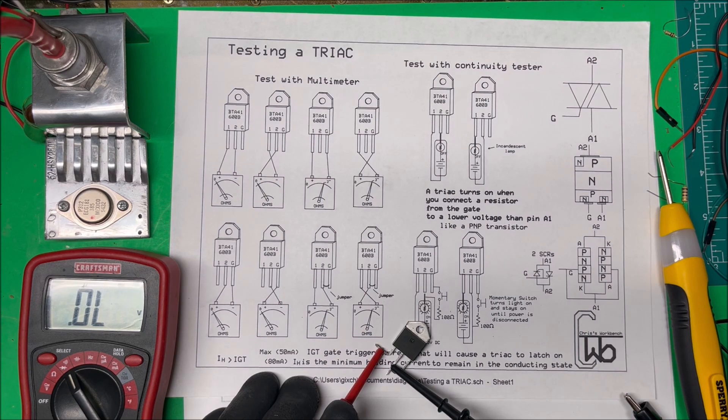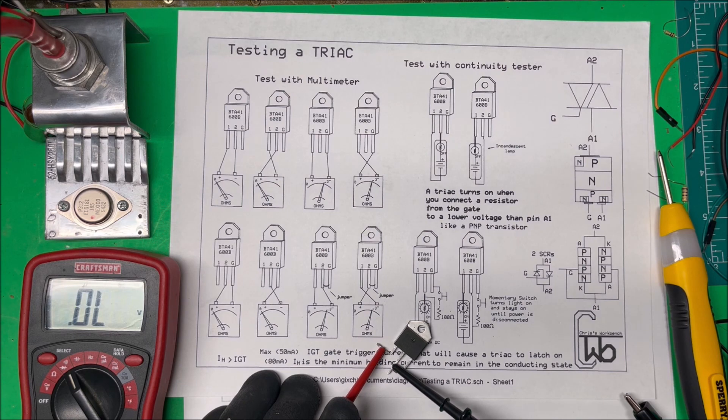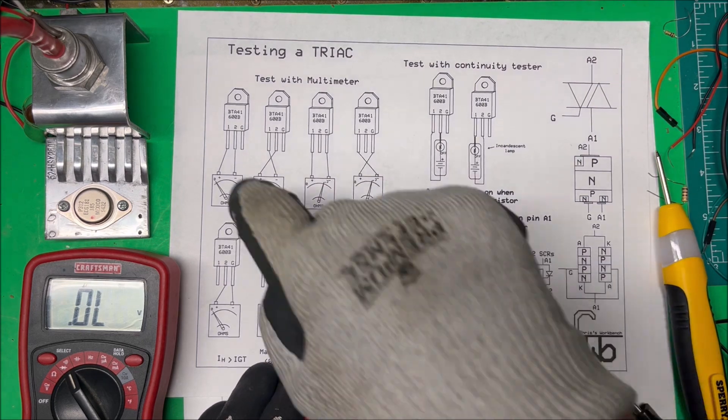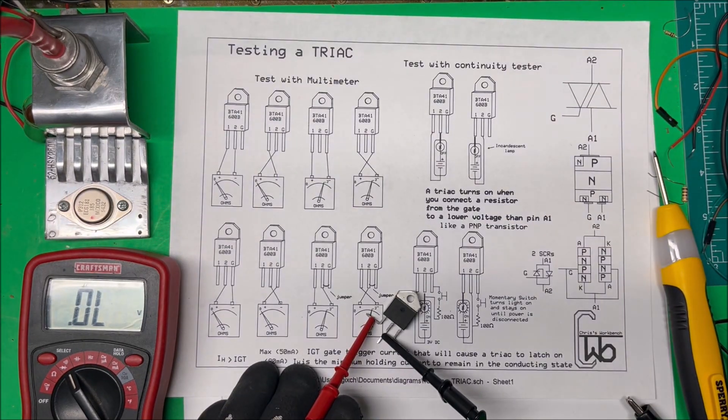Alright, let's test a TRIAC. We're going to test it with a multimeter first, putting the multimeter in diode mode. We're basically just testing the PN junction to see if they're okay. We start off with this one right here, which happens to be a BTA 41.